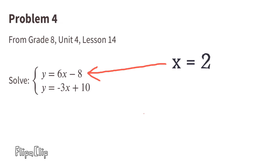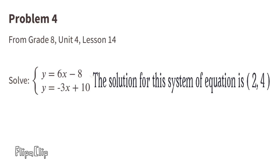And we have X equals 2. Now that we know the value for X is 2, we can substitute the X with a 2 in this equation. Now it reads Y equals 6 times 2 minus 8. 6 times 2 is 12, so now we have Y equals 12 minus 8. 12 minus 8 is 4, so we have Y equals 4. The solution for this system of equation is X value 2 and Y value 4.